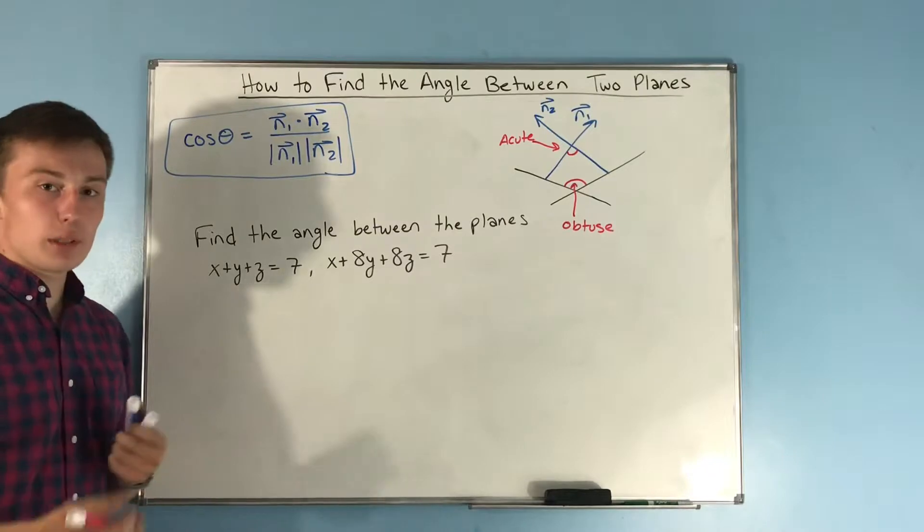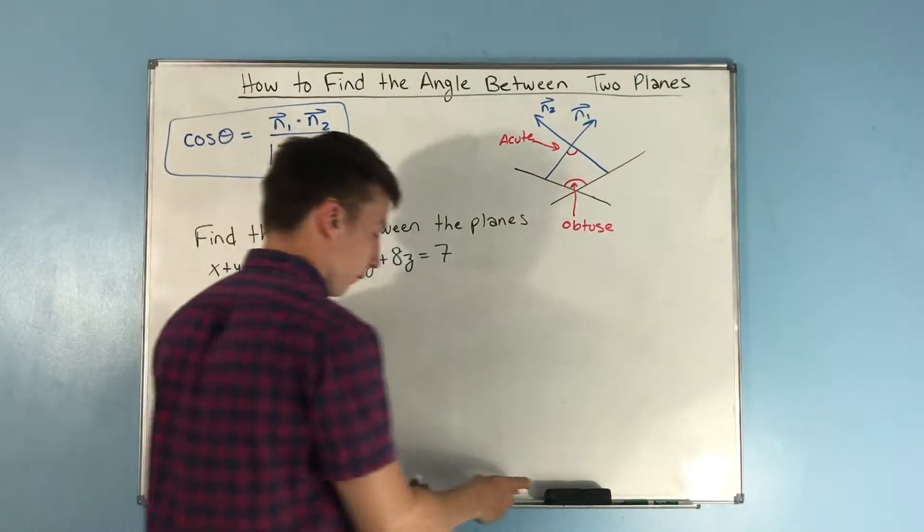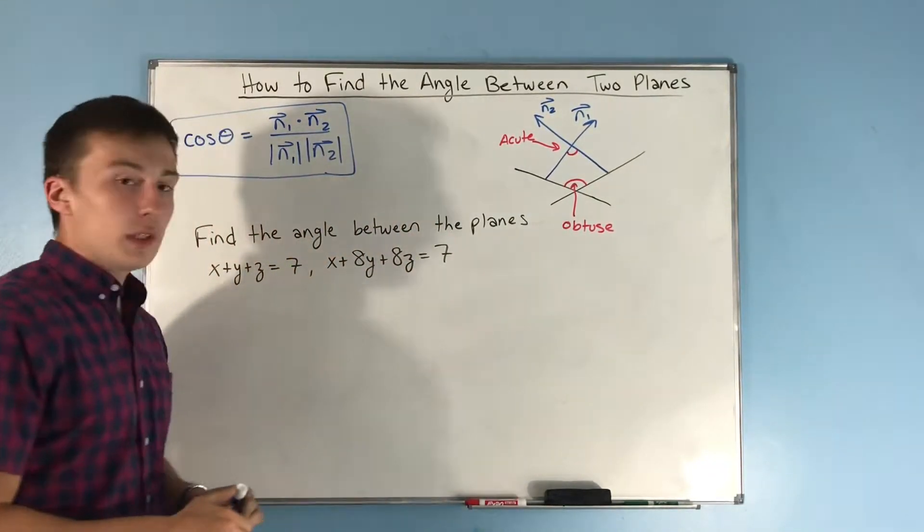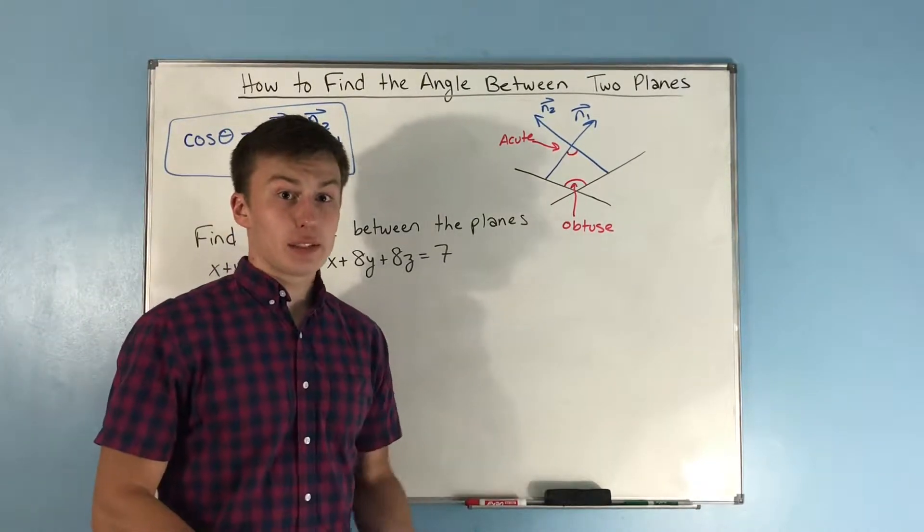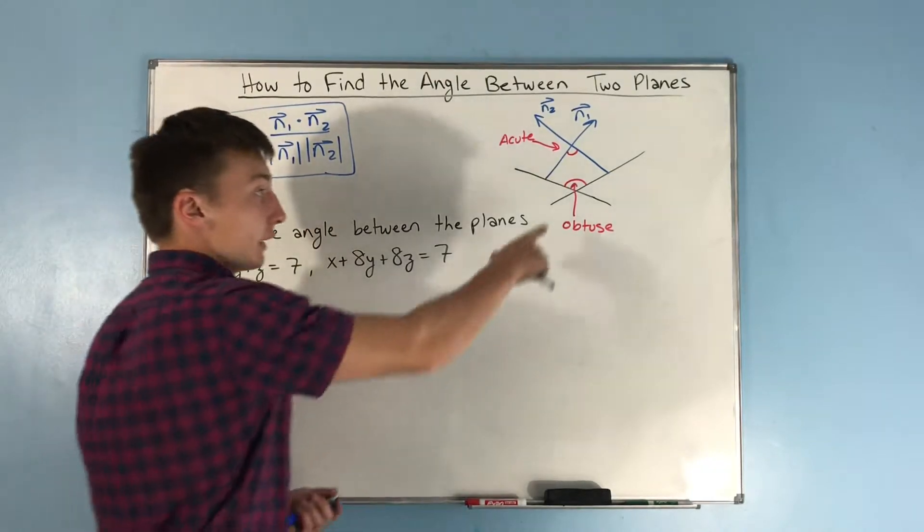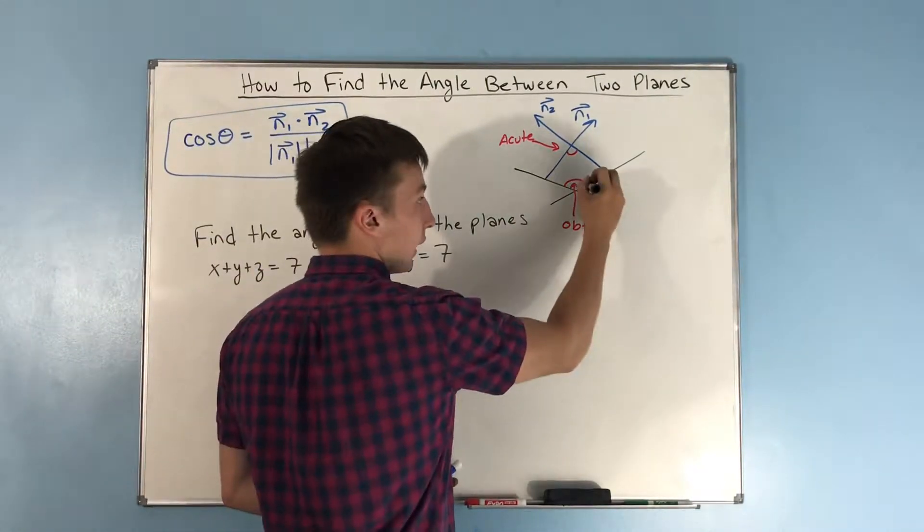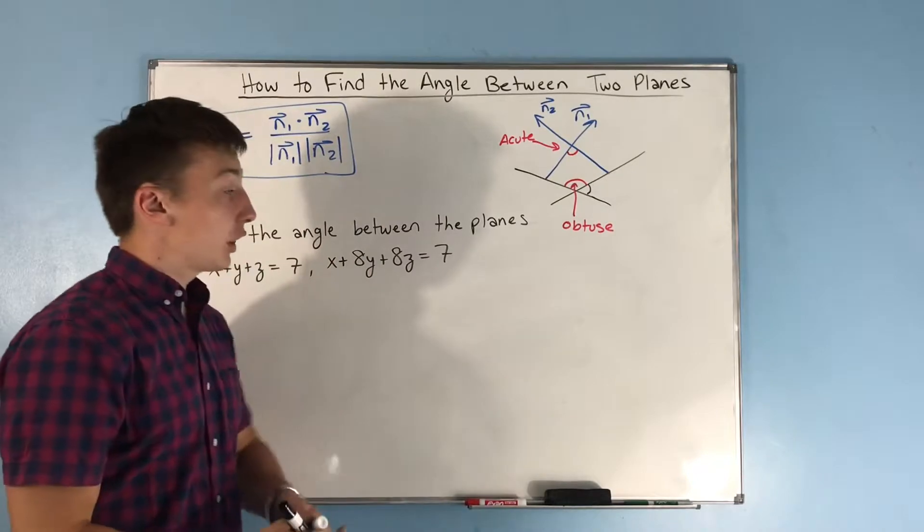All right, so that's what didn't really make too much sense to me. But what I realized is that, well, there's two different angles between planes. There's, yes, this angle, but then look at the angle right next to it. This angle between planes, that's acute.